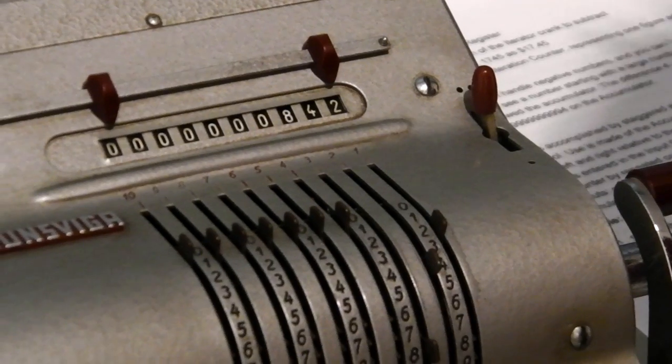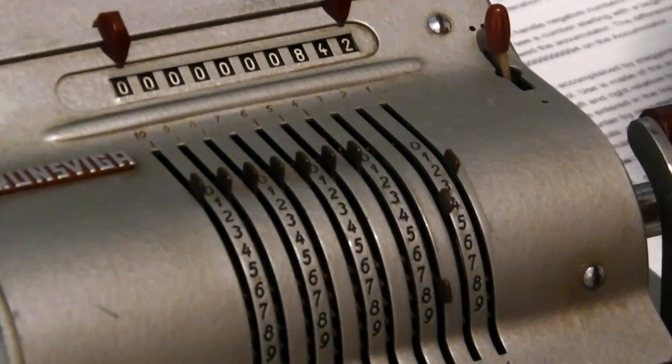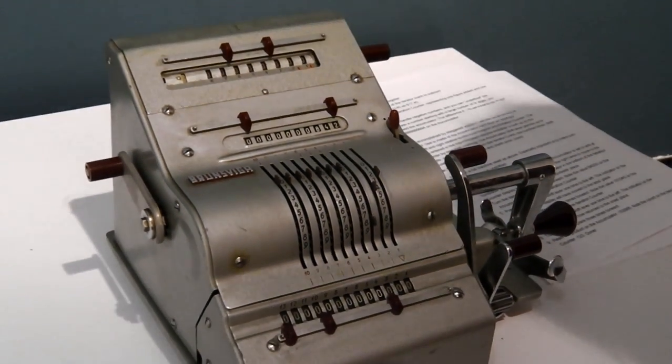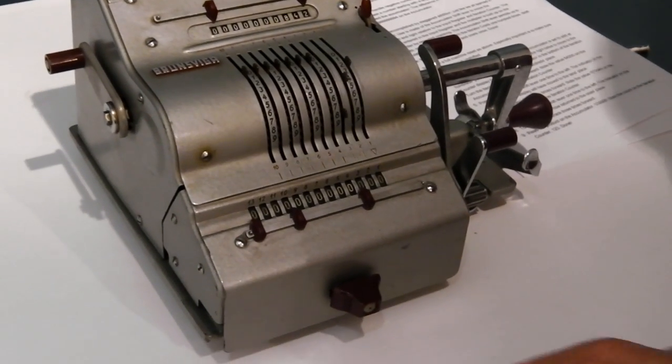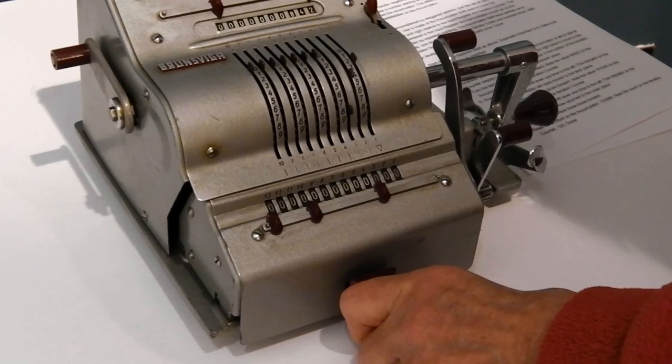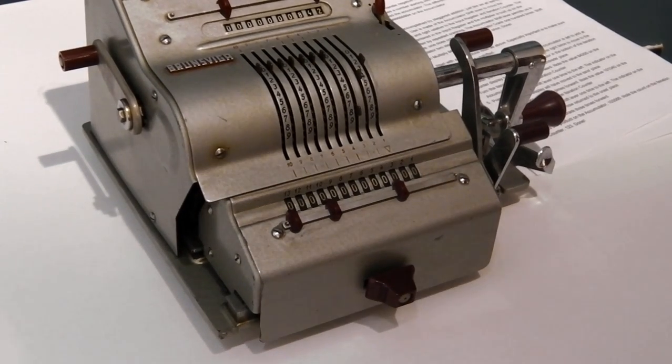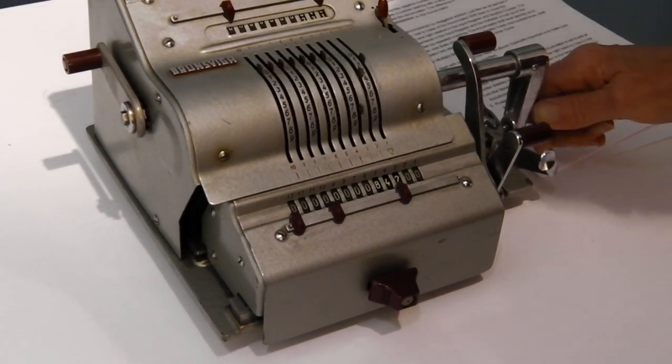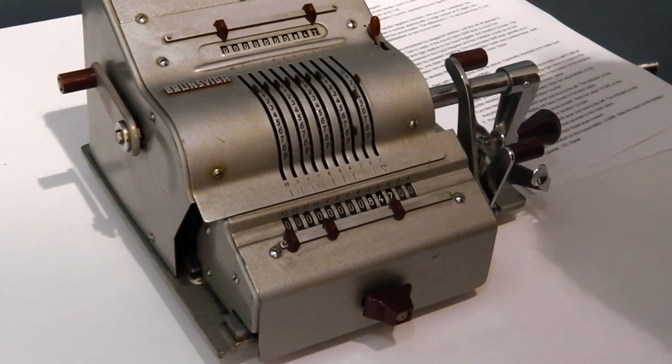Because we're going to multiply by 123 we'll start by multiplying by 100. So we move this register two places to the right and then turn the handle once so we've multiplied by 100.